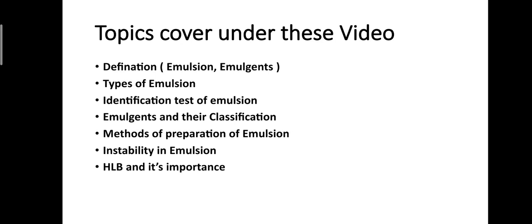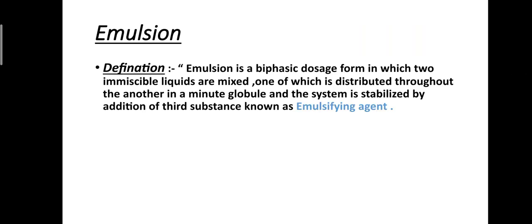Definition of emulsion: Emulsion is a biphasic dosage form in which two immiscible liquids are mixed, one of which is distributed throughout the other in minute globules, and the system is stabilized by the addition of a third substance known as emulsifying agents. Biphasic means two phases.